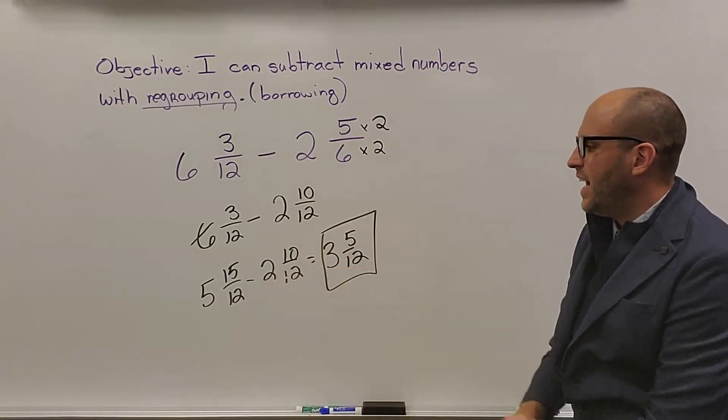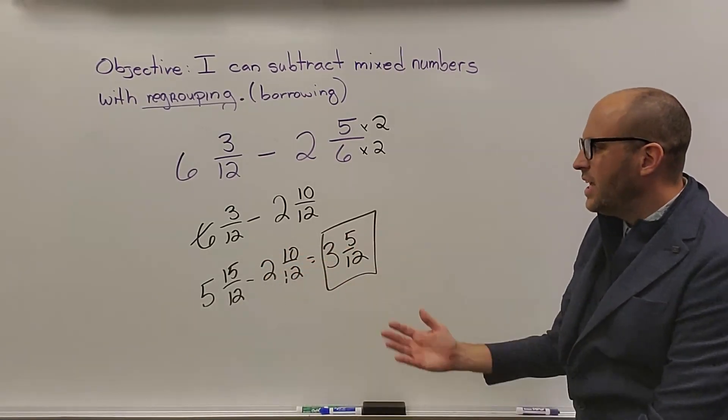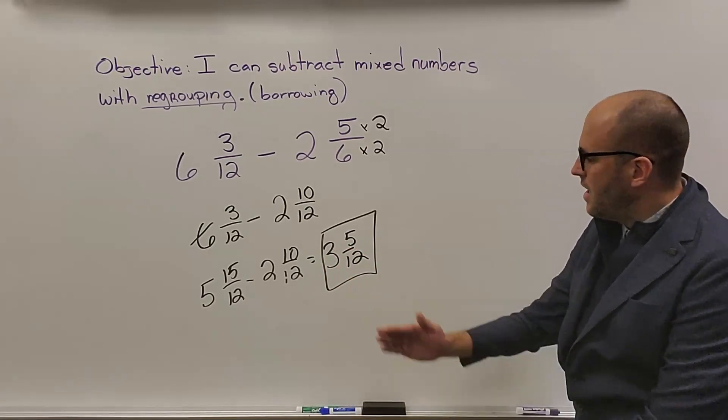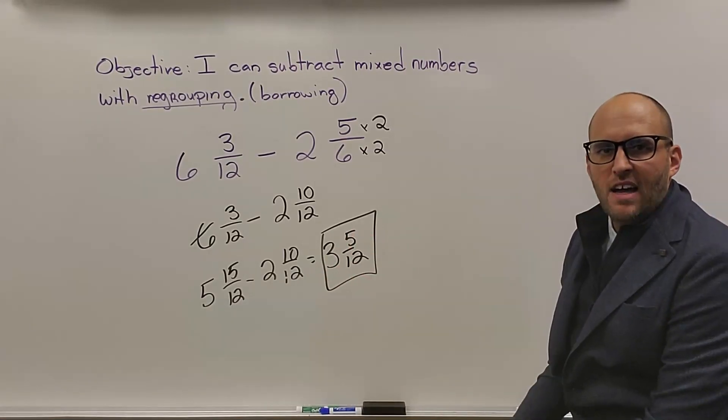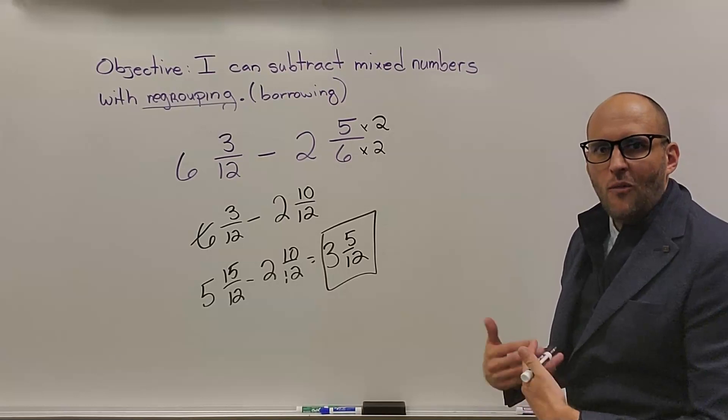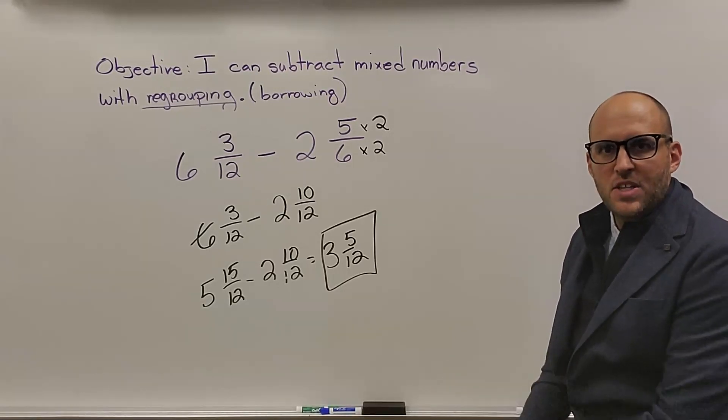15 minus 10 is 5. 5 minus 2 is 3. No simplifying required. We have 3 and 5 over 12. So hopefully we're feeling a little bit better about this now. Let's get to our last two problems of this video.